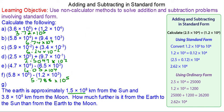For question g, we need to work out the difference between the Earth to the Sun and the Earth to the Moon. We've got 1.5 × 10⁸, which is 150 million.